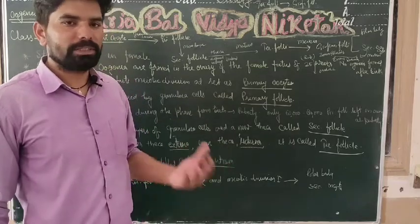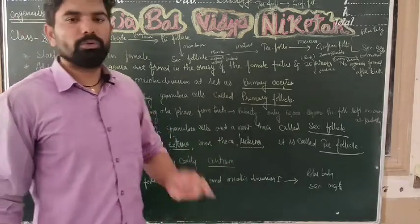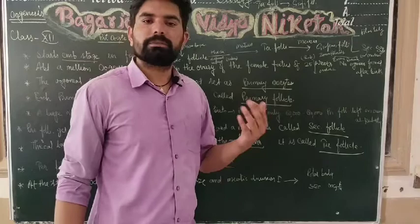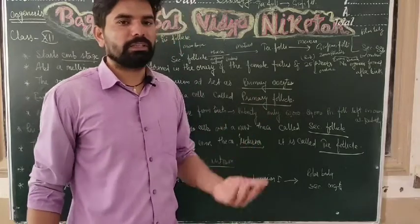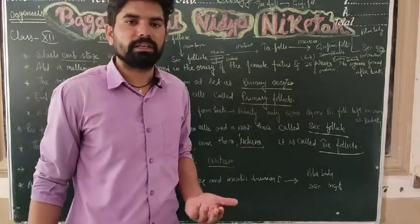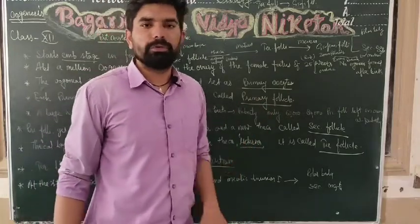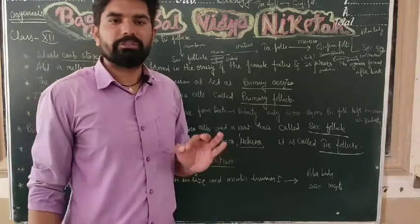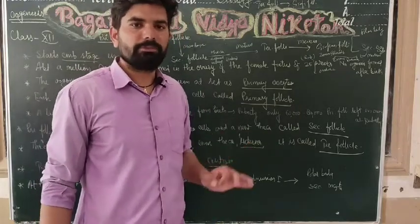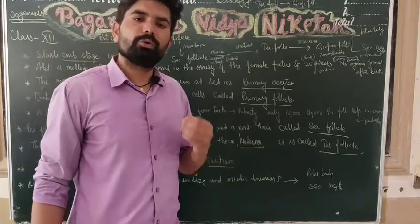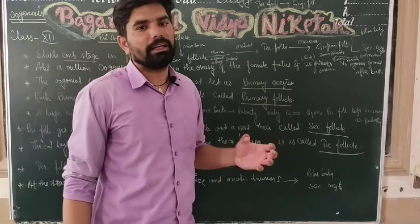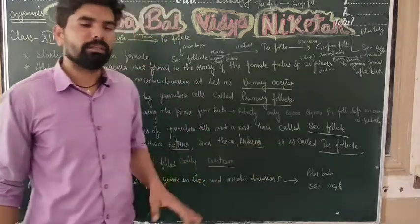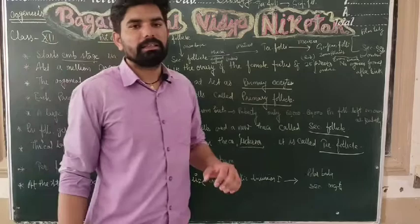After birth, no new oogonia are formed. About a million oogonia are present, but many of them degenerate over time.